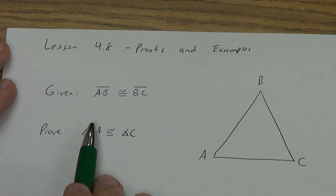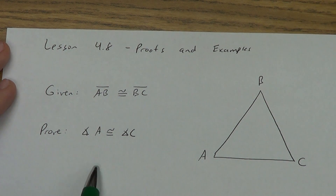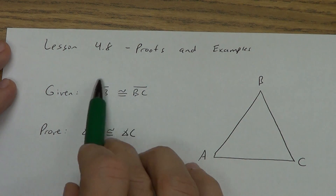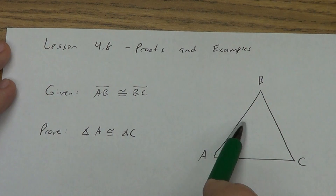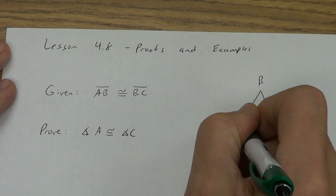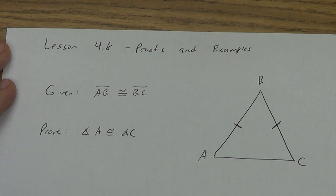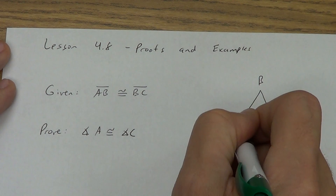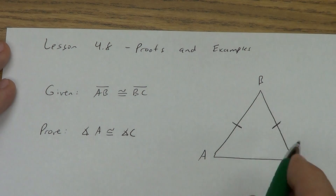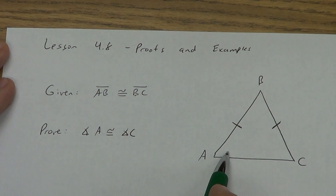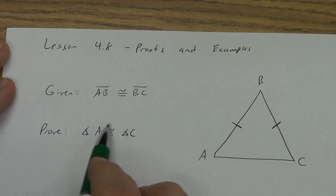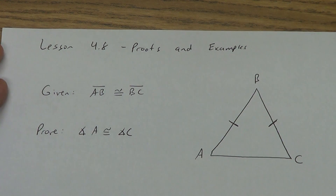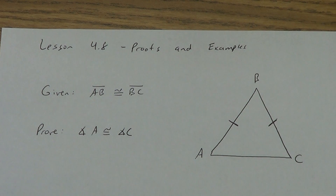We're going to prove right now that the base angle theorem works. The base angle theorem says if you have two congruent sides — that's our given — AB is congruent to BC. If this is true, then the angles across from those sides, angle A and angle C, have to be congruent. We are going to prove that this theorem actually works.